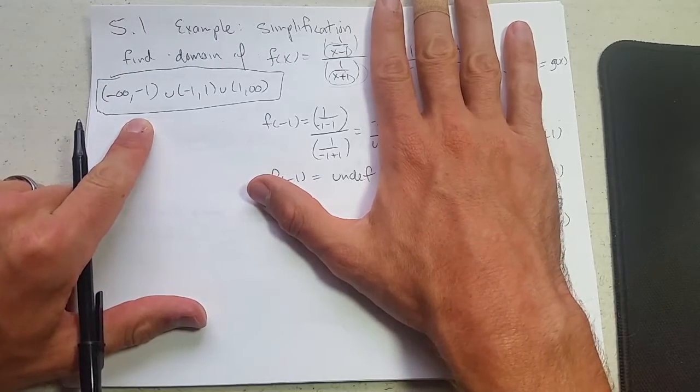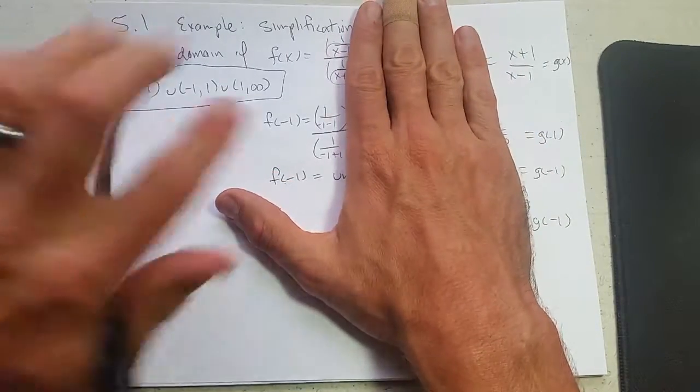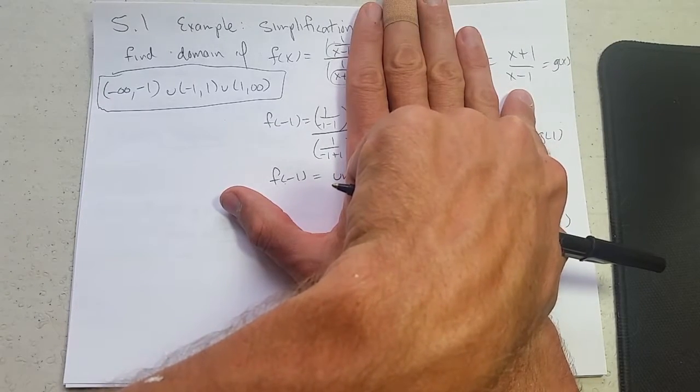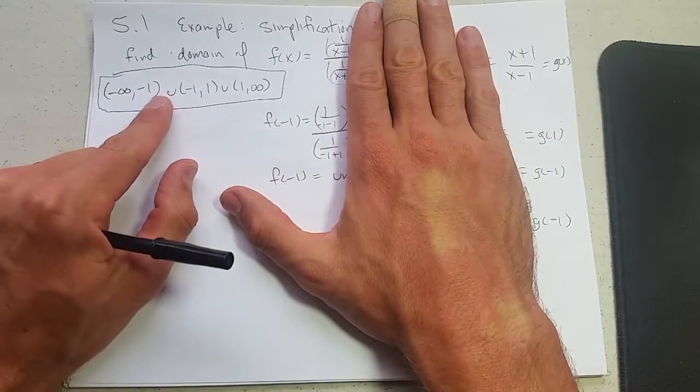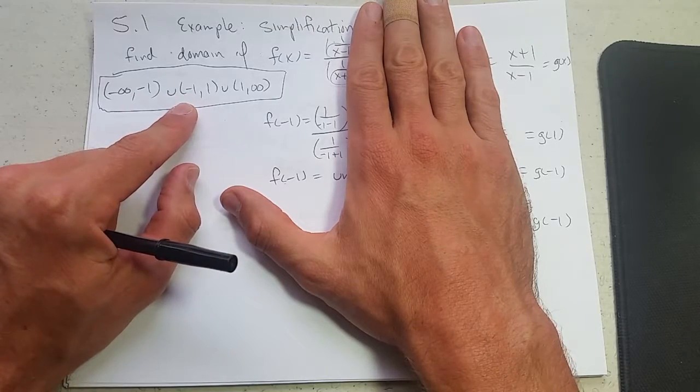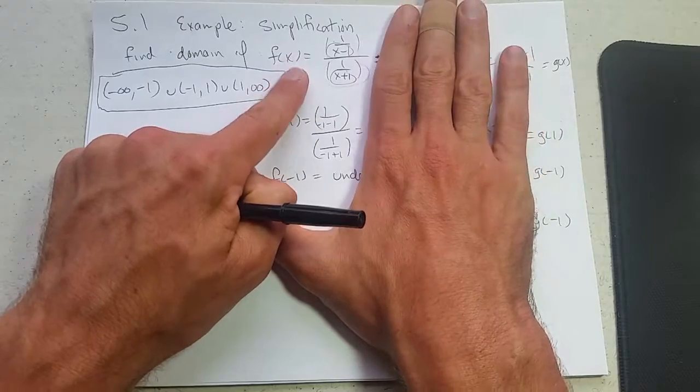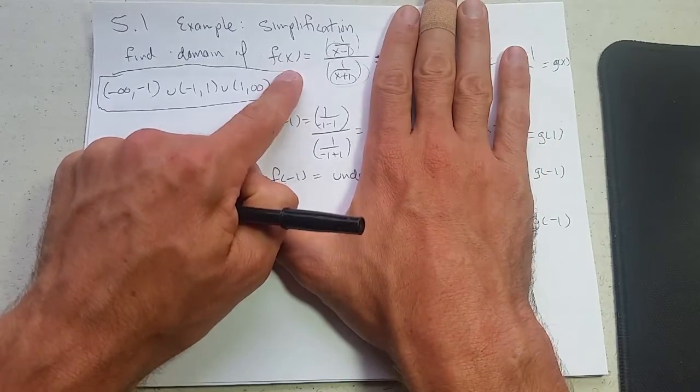And I'm showing you this because if you simplify and you're not careful and you look only at the simplified version, what you will miss is this negative one right here. So f and g do not have the same domain, so you want to find the domain before you simplify.